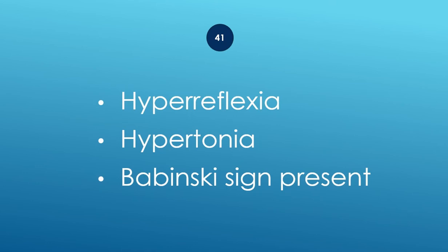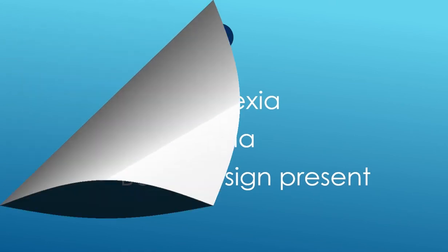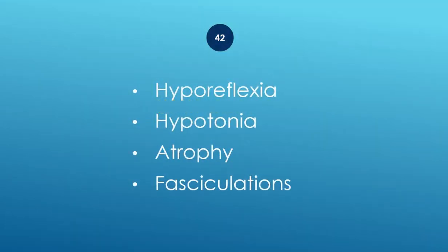Hyperreflexia, hypertonia, and Babinski positive — upper motor neuron damage. Hyporeflexia, hypotonia, atrophy, and fasciculations — lower motor neuron damage.